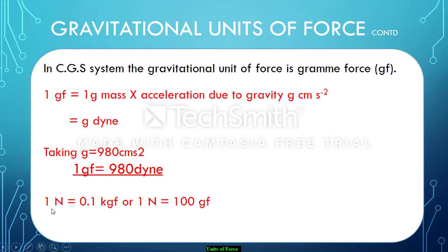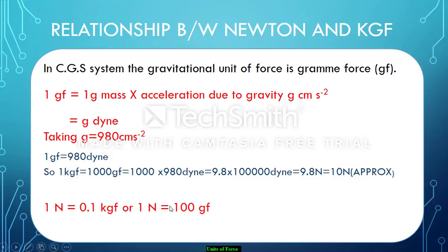So how does this formula come? 1 Newton is 0.1 kgf, or 1 Newton is 100 grams. Let's see in the next slide. In CGS system, the gravitational unit of force is gram force, right? So here, taking g as 980 centimeters per second square, just remember this one: 1 gf is 980 dyne. Now 1 kgf is how much? 1 kg into force. That is, 1 kg is converted here into 1000 gf. So 1000 gf, again 1000 into gf.